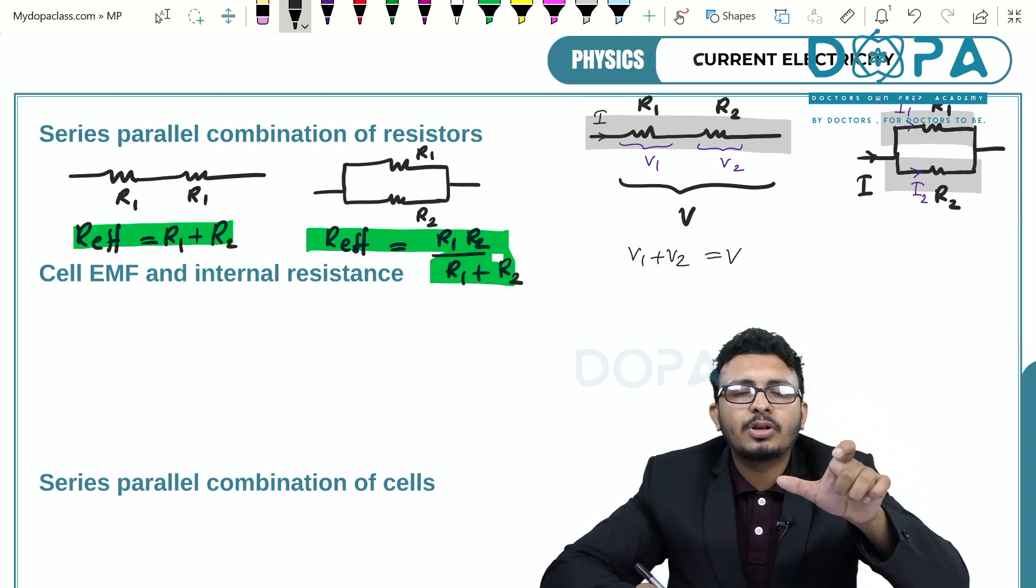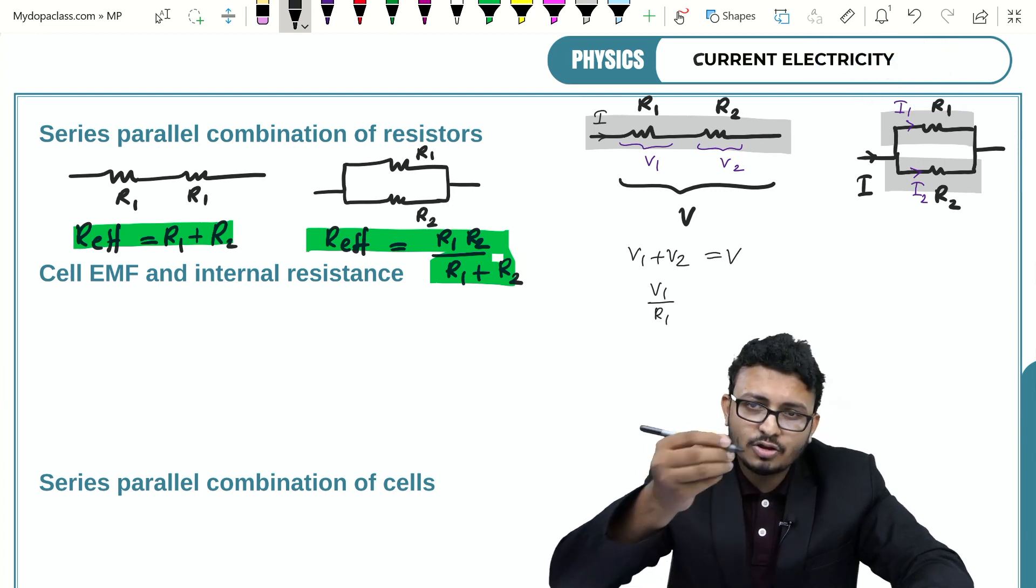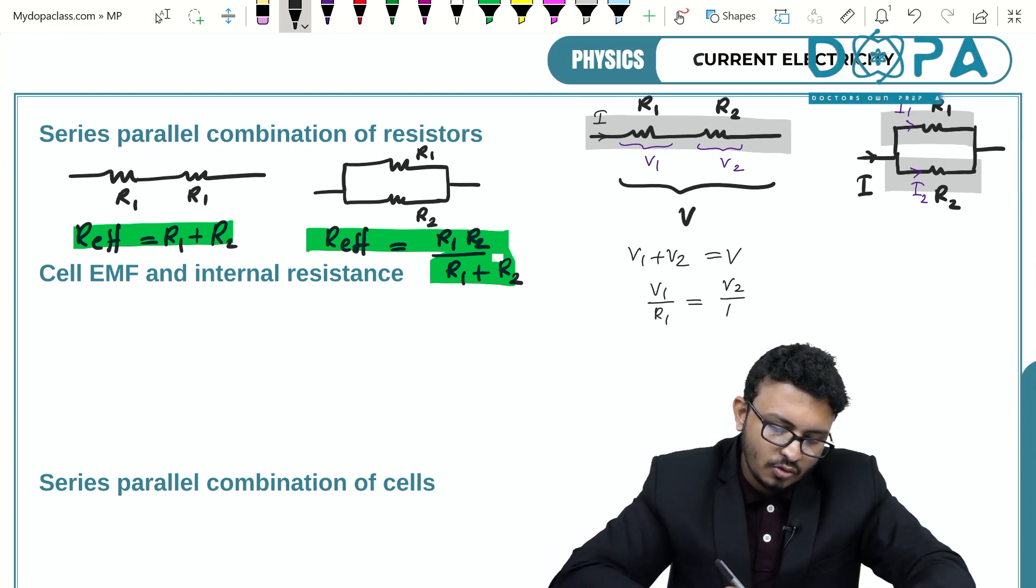So if V1 is the potential difference across R1, the current through it is V1 by R1. This has to be equal to the current through the second one, which is V2 by R2.